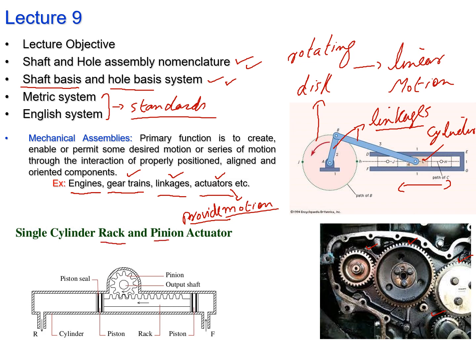This is an example of a single cylinder rack and pinion. The rack and pinion is basically a gear system where there is a rotary gear (the pinion) and a rack which moves to and fro. The pinion moves in one direction or the other, moving the rack. This rack and pinion actuator moves the piston to and fro. These are actual examples of gear trains, linkages, and actuators.